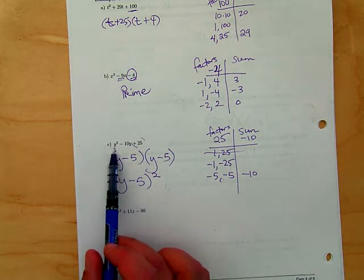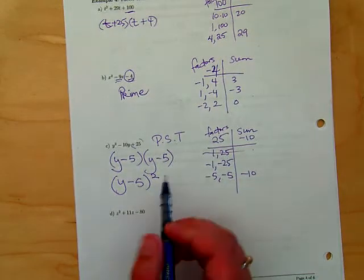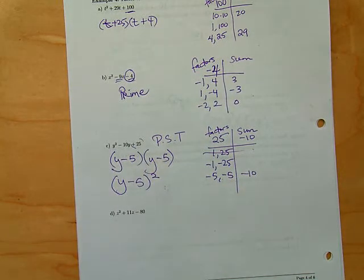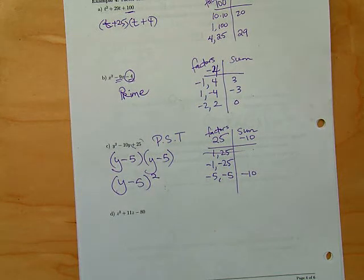This is a special case we call a perfect square trinomial, PST, because when you square a binomial you always get a trinomial. The biggest mistake people make is go square square. That's not how it works. You got to have the OI. Don't forget the OI.